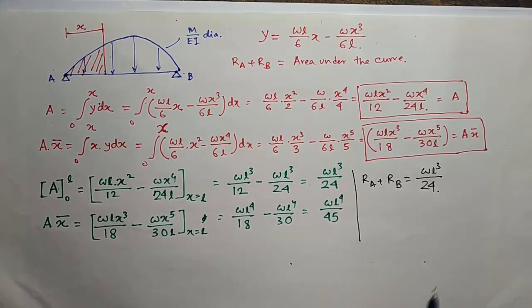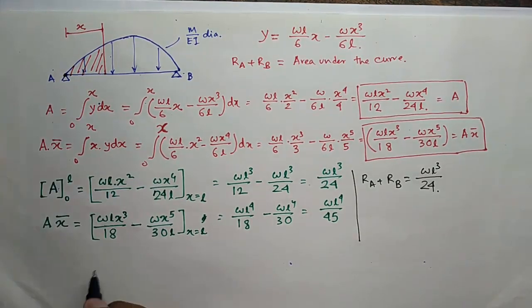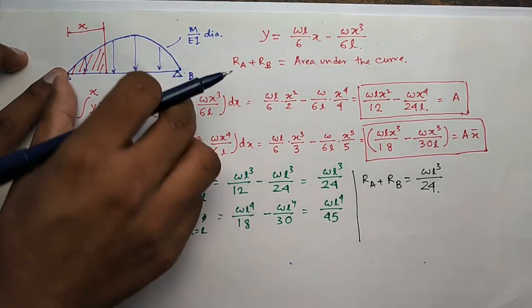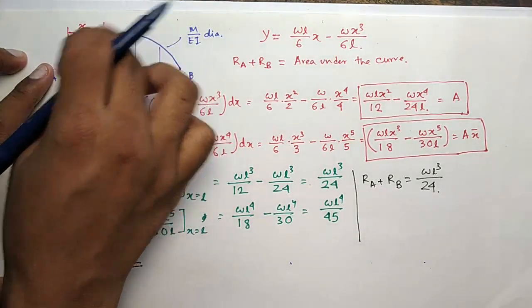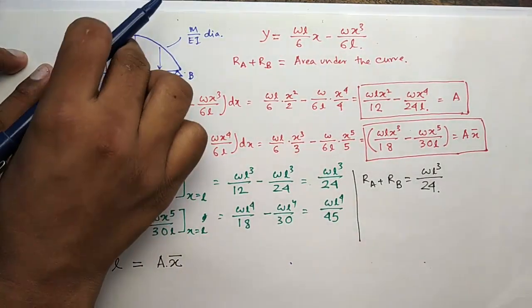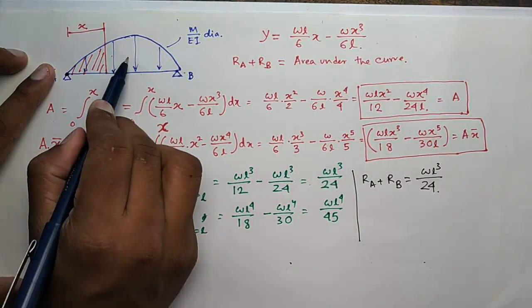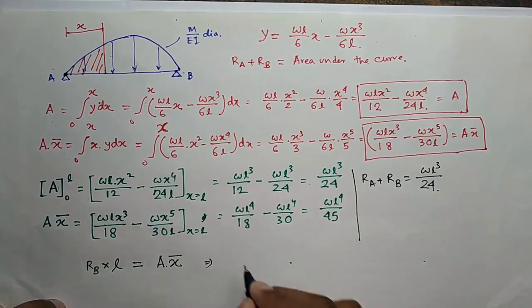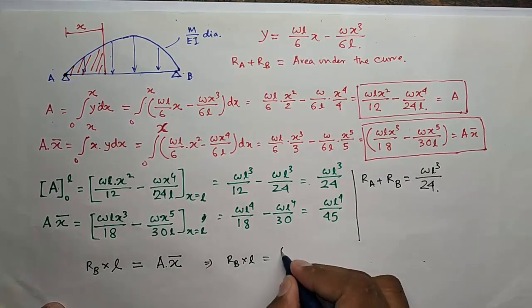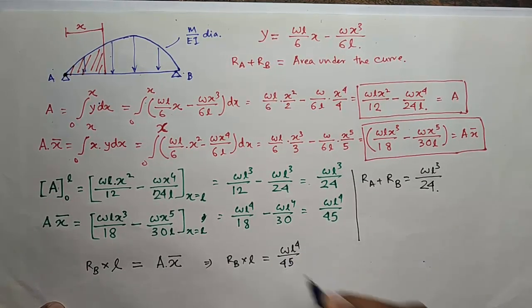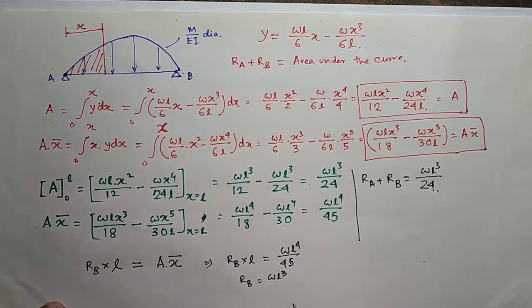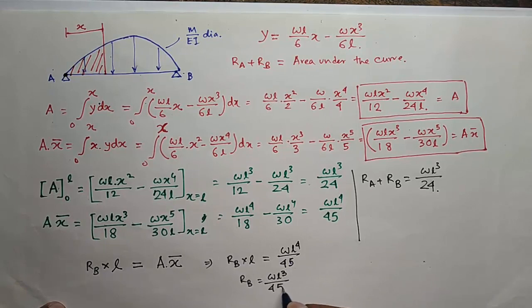Now find out RA and RB. Take moment about A. So you get RB into L equal to this total area into the CG distance, which is x bar from this. So RB into L equal to A into x bar, which is WL to the power 4 by 45EI. So RB is WL cubed by 45EI.